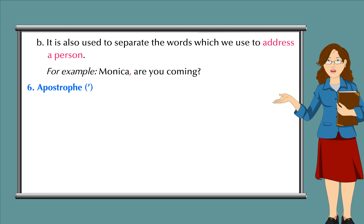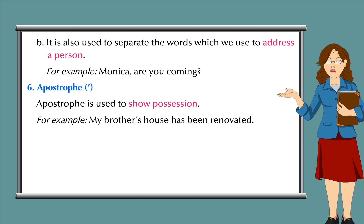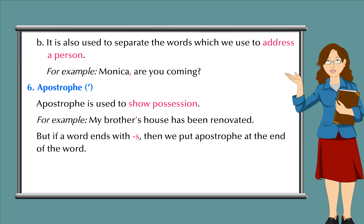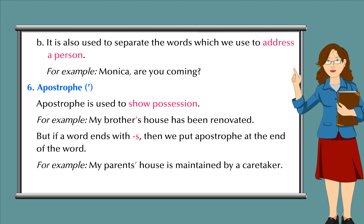6. Apostrophe. Apostrophe is used to show possession. For example, my brother's house has been renovated. But if a word ends with S, then we put apostrophe at the end of the word. For example, my parents' house is maintained by a caretaker.